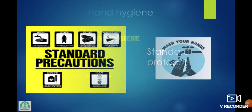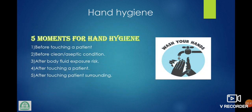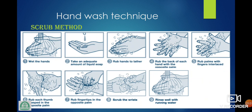Standard protocols — hand hygiene: 5 moments for hand hygiene — before touching a patient, before cleaning or aseptic procedures, before body fluid risk, after touching a patient, after touching patient surroundings. We should wash our hands. Hand wash technique — scrub method: wet the hand, take an adequate amount of liquid soap, rub the hand to lather, rub the back of each hand with the opposite palm, rub the palm with fingers interlaced, rub each thumb clasped in the opposite palm, rub fingertips in the opposite palm, scrub the wrist, then rinse well with running water.